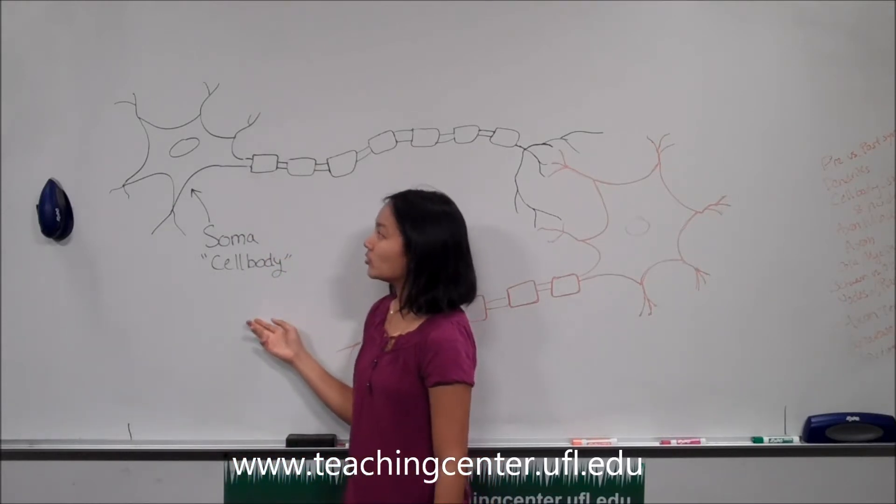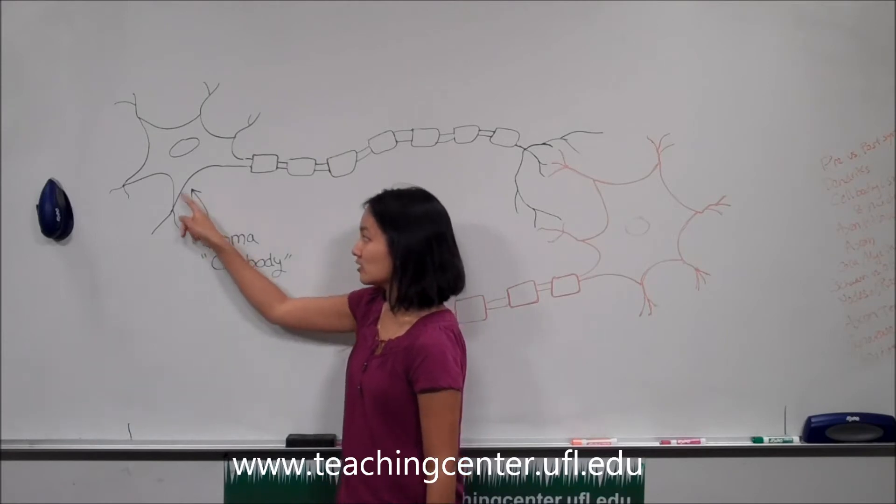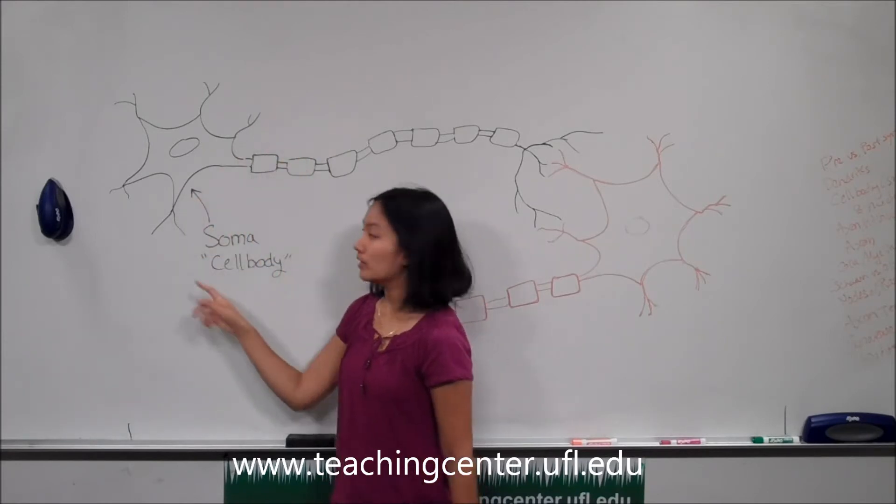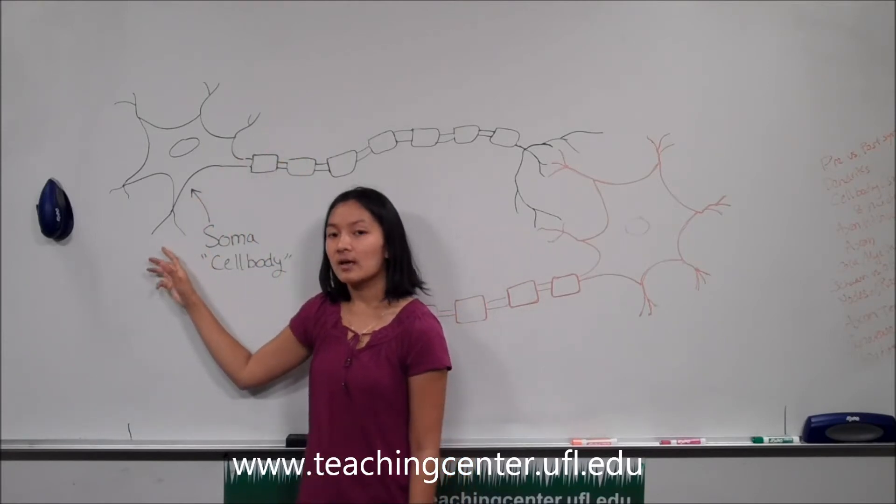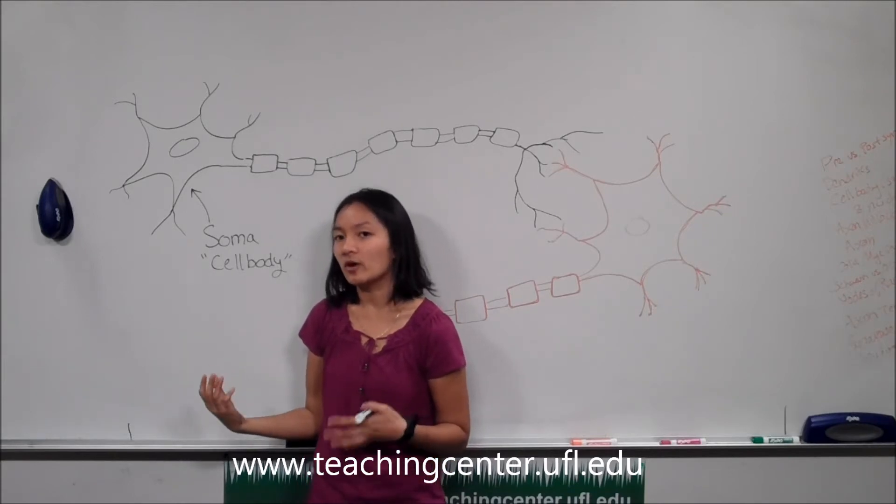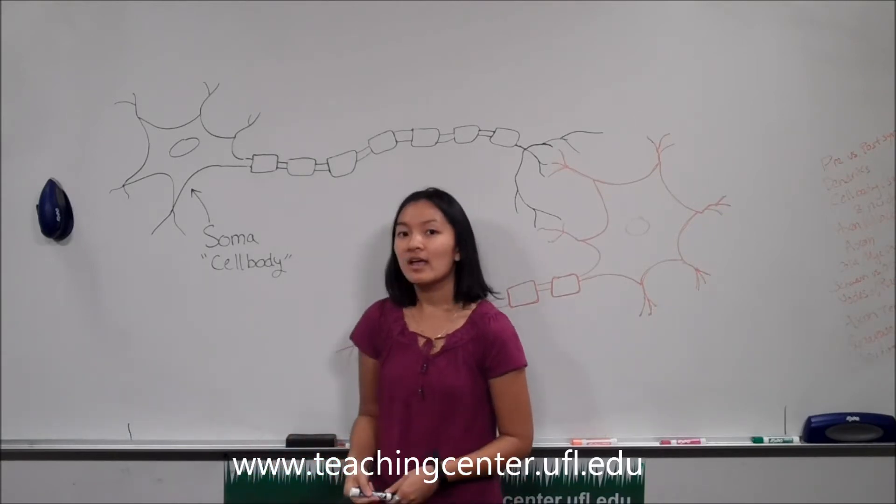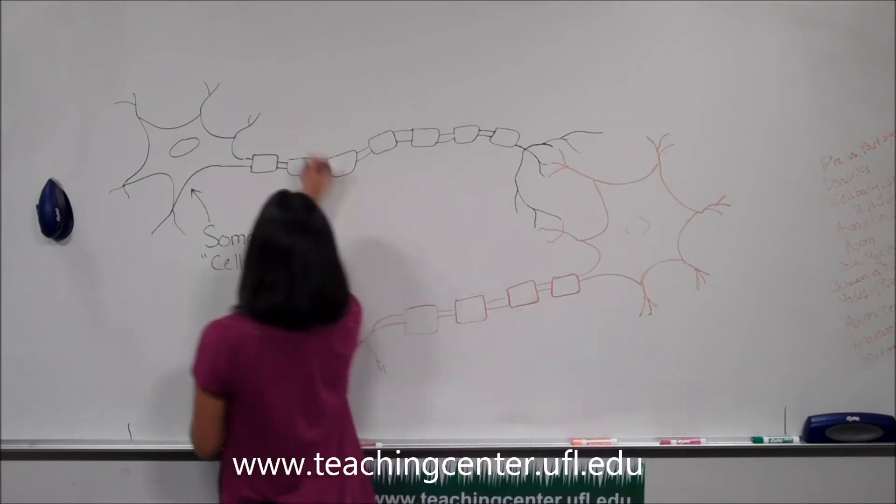Now on the soma, you can see these branch-like projections that come off. These branch-like projections basically detect signals from other neurons or the external environment, and they're known as dendrites.